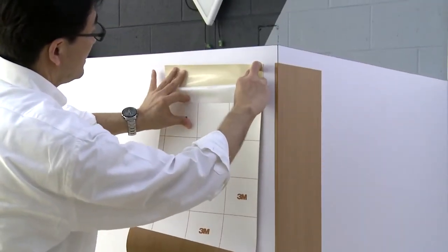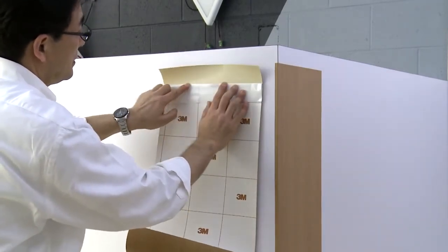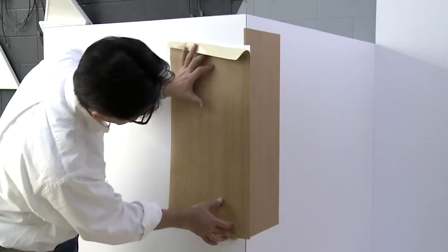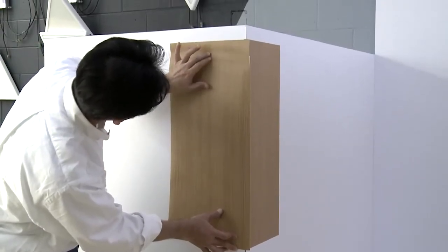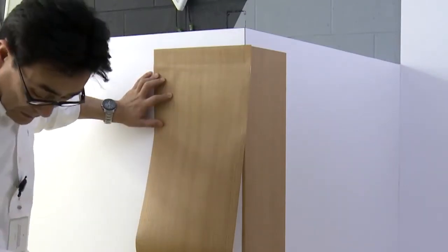Fold back a few inches of liner from the next film panel and crease the liner. Position the film so 1 inch of it extends past the outside corner while keeping the film aligned vertically. Use your fingers to lightly adhere the film to the wall.